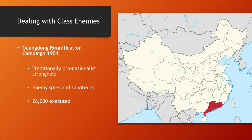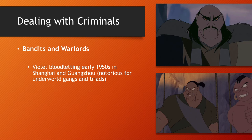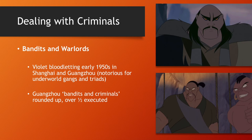Regarding bandits and warlords, there was a violent bloodletting in the early 1950s, specifically in Shanghai and Guangzhou. Most of them were executed or sent to the Laogai system, restoring some sense of stability and central control in China.